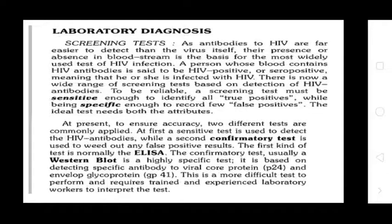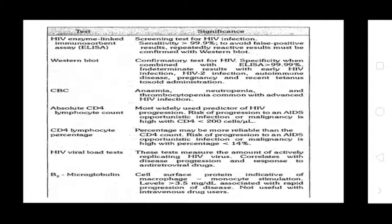Laboratory Diagnosis: Screening tests detect HIV antibodies, which are easier to detect than the virus itself. A patient's bloodstream is tested as the basis of the most widely used HIV infection diagnosis. A person whose blood contains HIV antibodies is HIV positive (seropositive), meaning they are infected with HIV. Antibody tests used for screening must be sensitive. The ideal test needs both sensitivity and specificity. Key tests include: HIV enzyme-linked immunosorbent assay (ELISA) as the screening test, Western blot as confirmatory test, complete blood count (CBC), absolute CD4 lymphocyte count, CD4 lymphocyte percentage, HIV viral load test, and beta-2 microglobulin.